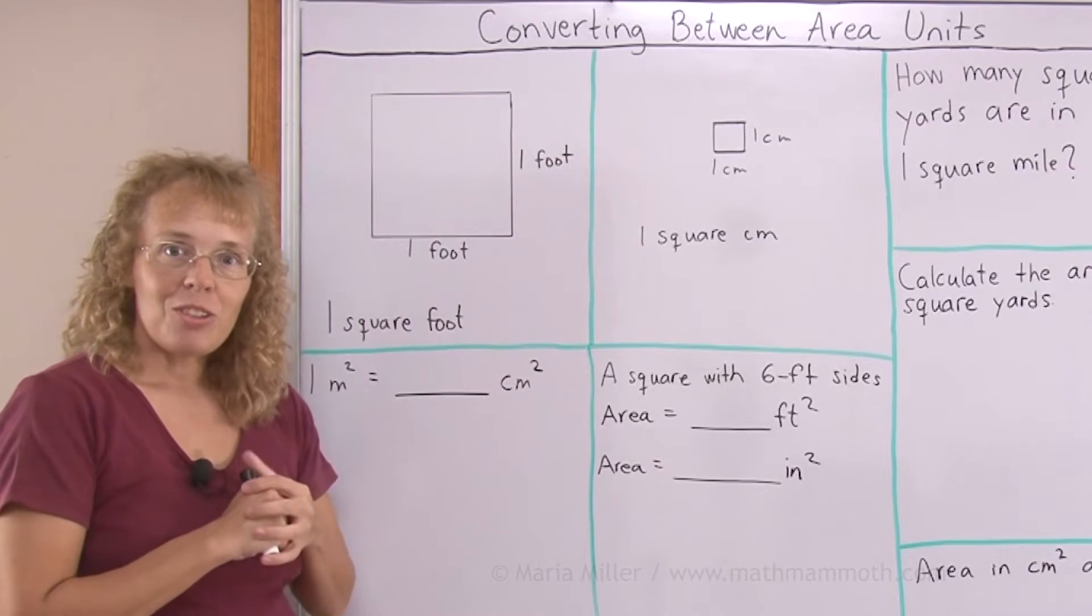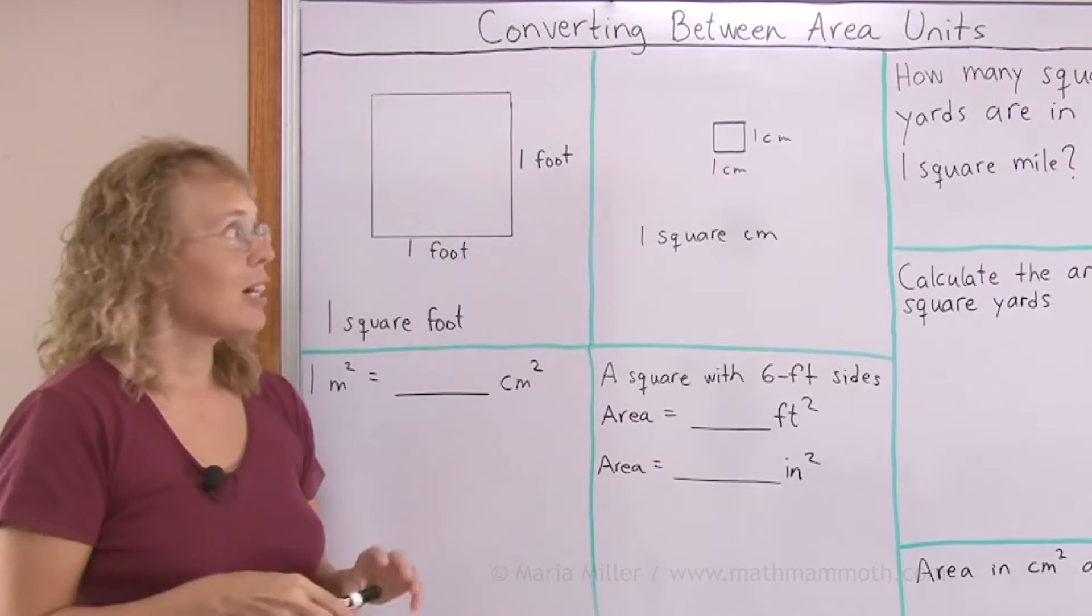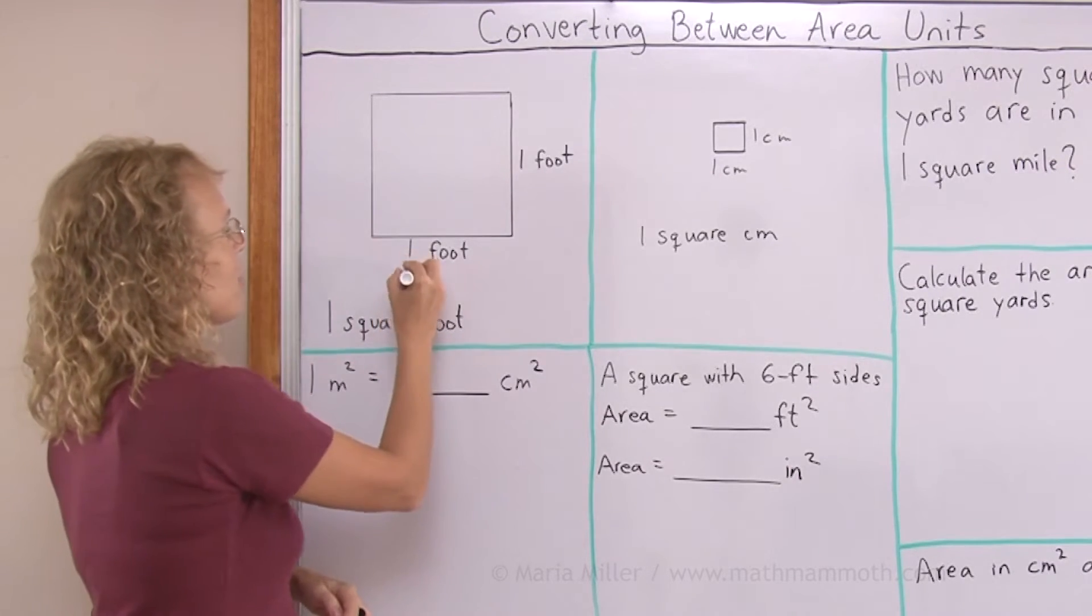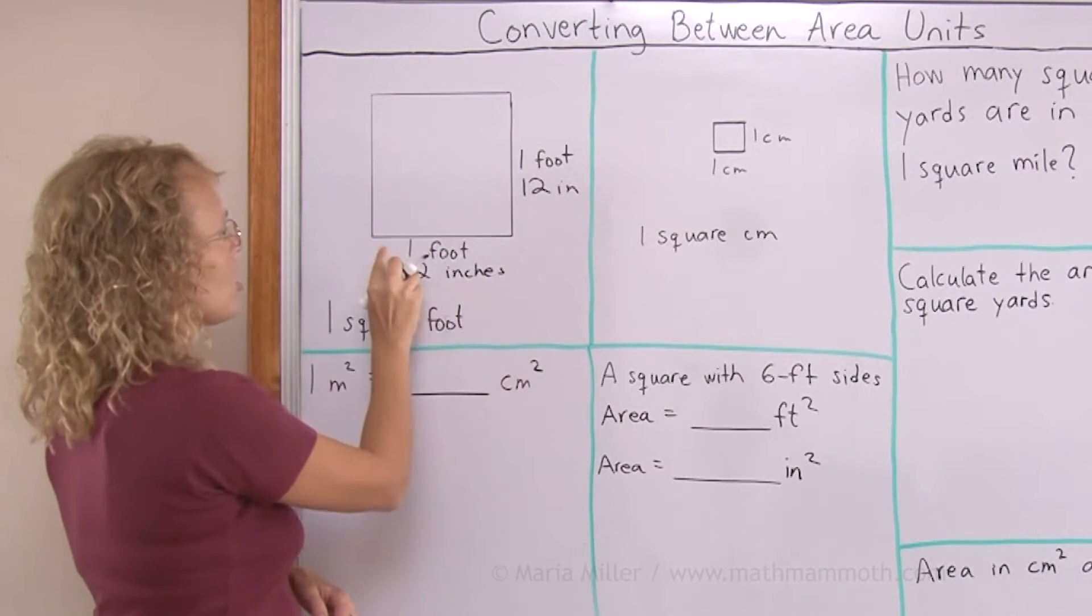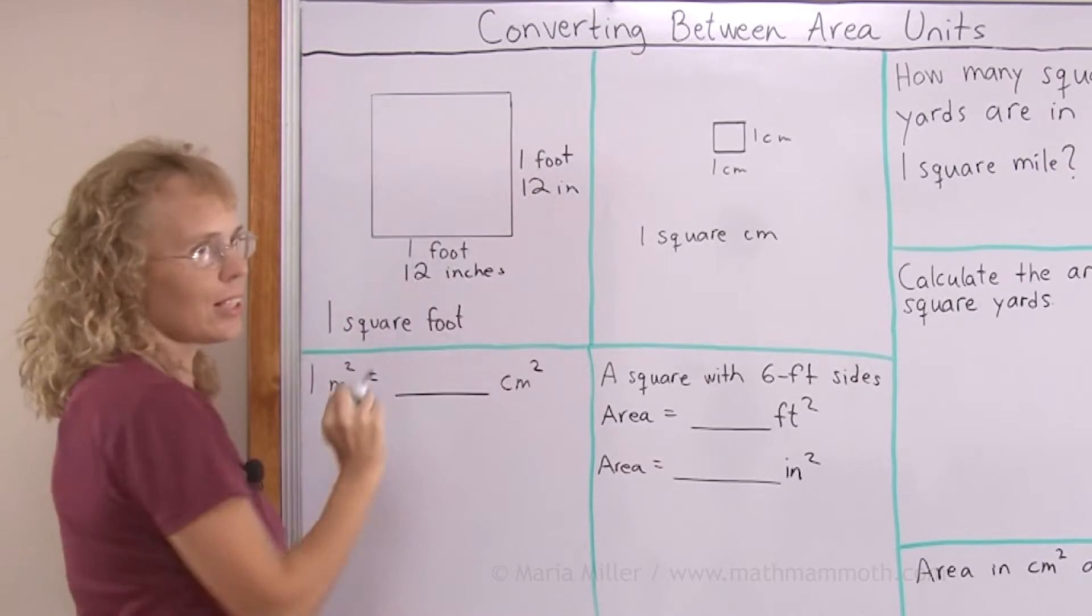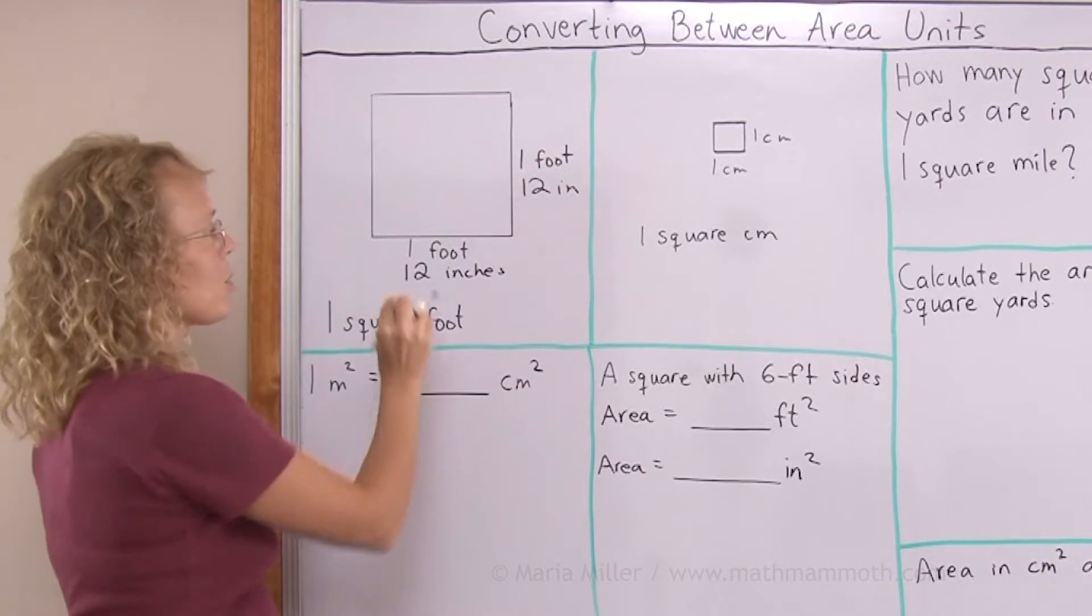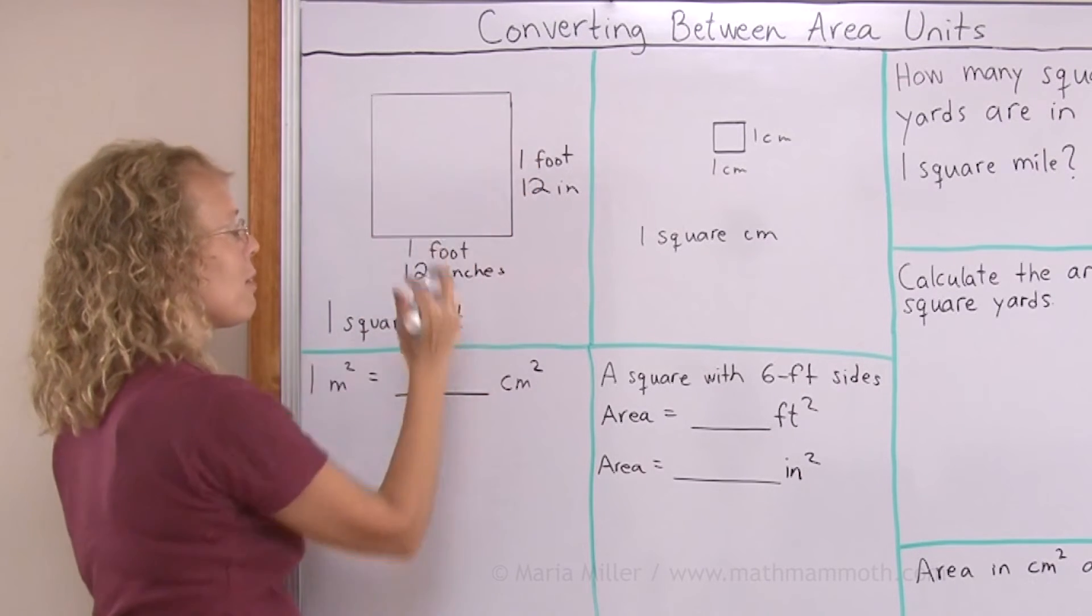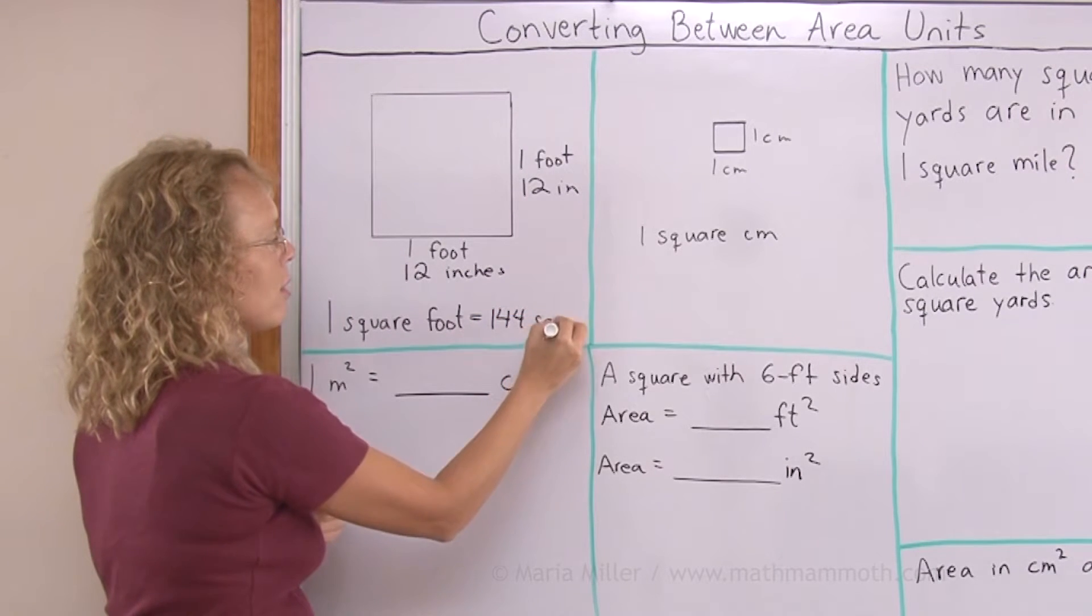But now we're going to convert it to square inches. And to do that, all you need to do is remember that one foot is how many inches? 12 inches, right? So this is actually 12 inches this way, 12 inches that way. And now, to find the area in square inches, all you do is multiply 12 times 12. Equals 144 square inches.